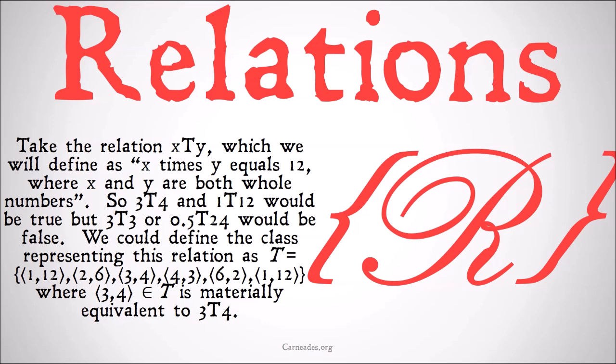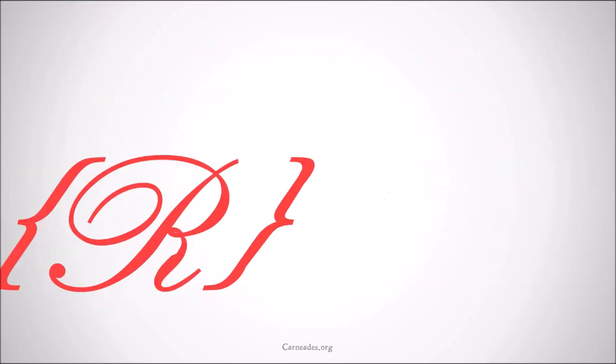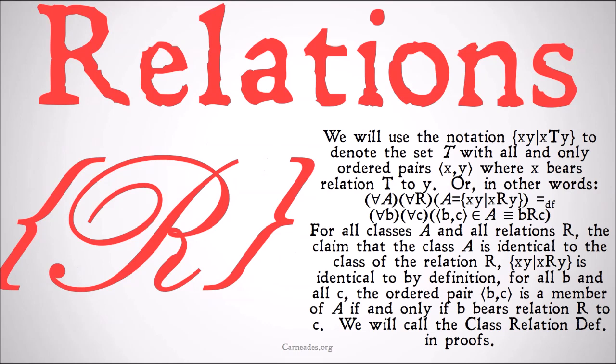Some authors may use them interchangeably and not distinguish between the class and relation, basically defining the relation as the class. Here I'm going to be a little bit more specific, but only within the nuance of doing italics or not. We're going to use the notation 'class of xy bar xTy' to denote the set T with all and only ordered pairs xy where x bears relation T to y, similar to the predication symbol that we looked at earlier.